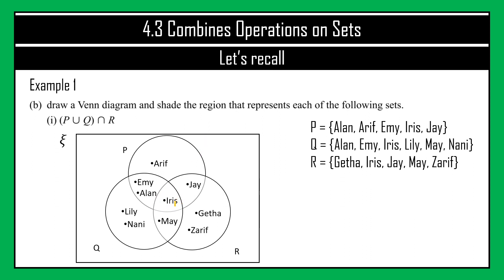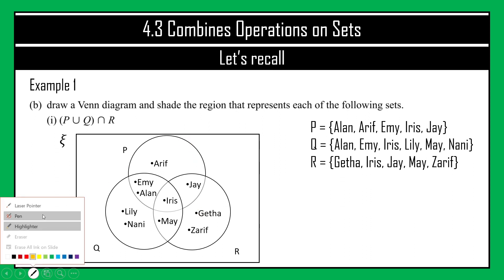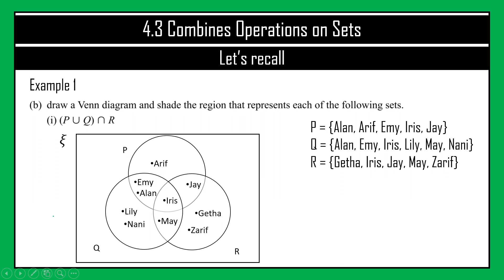I prefer to start placing Iris first, since she has all three hobbies, putting her in the centre where all three circles overlap. Then place the other pupils in their respective intersecting areas. I number each of the seven sections of the Venn diagram — sections 1 through 7 — to help answer the shading part of the question.